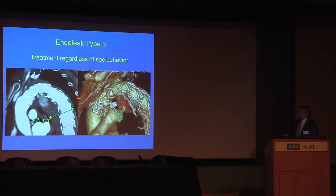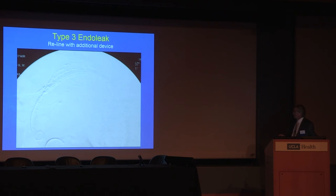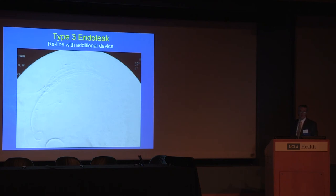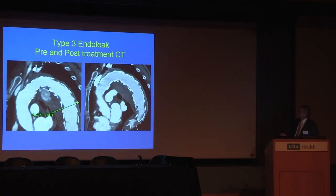Here's a Type 3 endoleak — an endoleak between junctions of the graft, with the aneurysm increasing to just over 6 centimeters in size. You reline it with an additional device and basically eliminate the Type 3 endoleak in that fashion. Here's the pre and post treatment: before treatment it was 6.4 centimeters, and after treatment there is no endoleak.